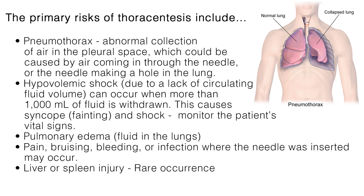Pneumothorax is an abnormal collection of air in the pleural space, which could be caused by air coming in through the needle, or the needle making a hole in the lung. If enough air gets into the pleural space, the lung can collapse, which may require a chest tube. To help prevent a pneumothorax, it is important that less than 1500 milliliters of fluid be removed at one time. If the fluid is completely drained at one time, needle laceration of the visceral pleura and the lung is more likely to occur.